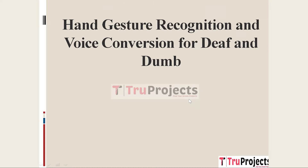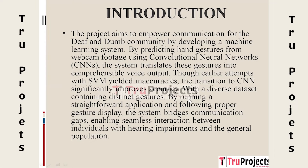Welcome to True Projects. In this video we are going to explain about hand gesture recognition and voice conversion for deaf and dumb people, using a machine learning system. The technology converts hand motions into understandable audio output using a convolutional neural network (CNN) to predict hand gestures from webcam images. Despite initial attempts using SVM producing inaccurate results, switching to CNN greatly increases accuracy, eliminating communication gaps for those with hearing impairments.